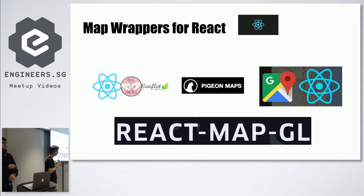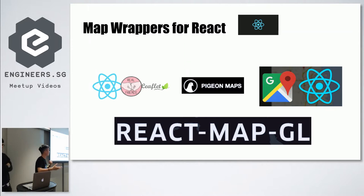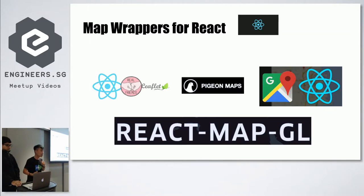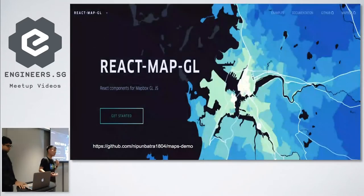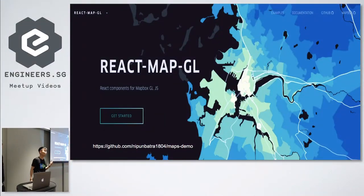Because it was designed by Uber, the documentation was actually pretty clean and pretty straightforward to use, as compared to Pigeon Maps and Leaflet. I guess maybe for our standard, we are not high level enough to actually understand documentation that isn't well structured.